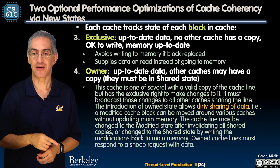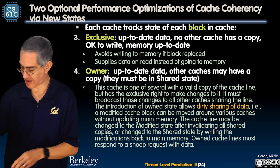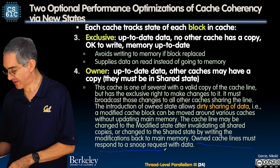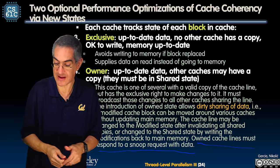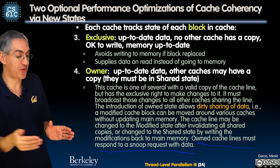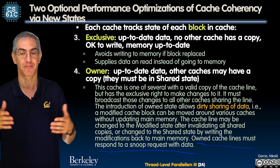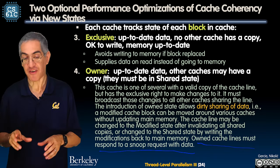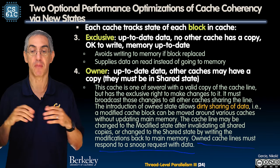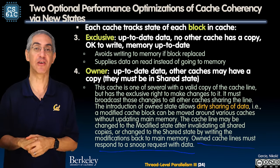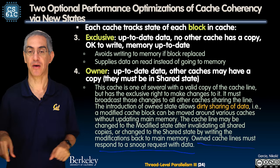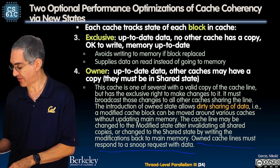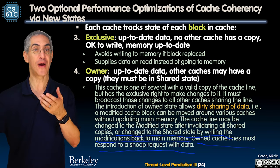The key line is: owner cache lines must respond to a snoop request with data. That's the snoopy idea. My cache is empty, I ask does anybody have it, and the owned cache has to respond with the 40. I load the 40, put it in, and I become another shared member. Another model: if I wanted to modify it, I could change the cache line to the modified state.